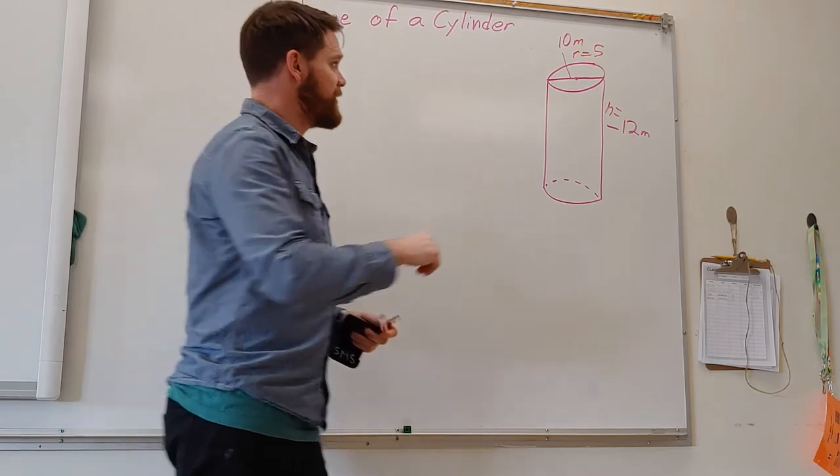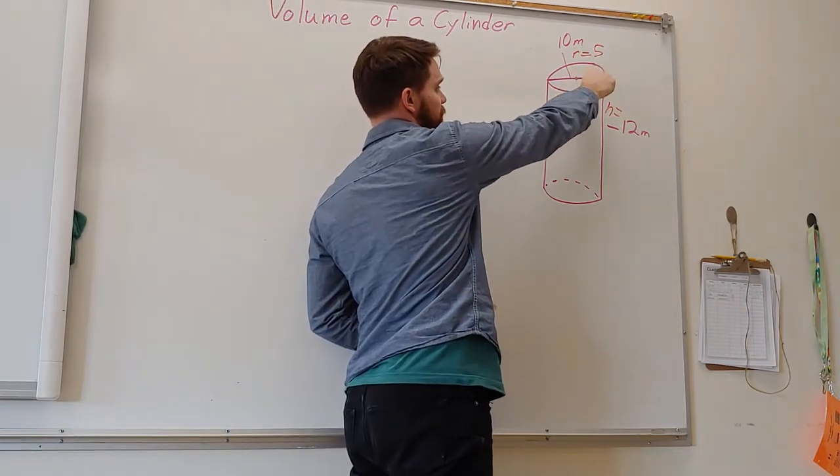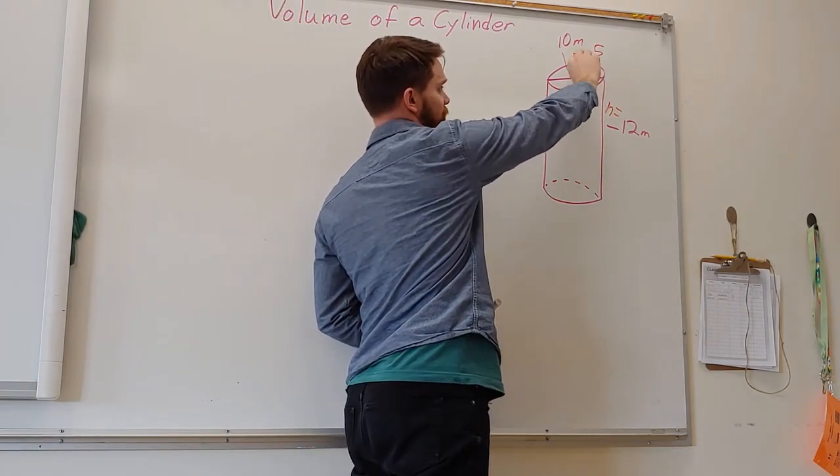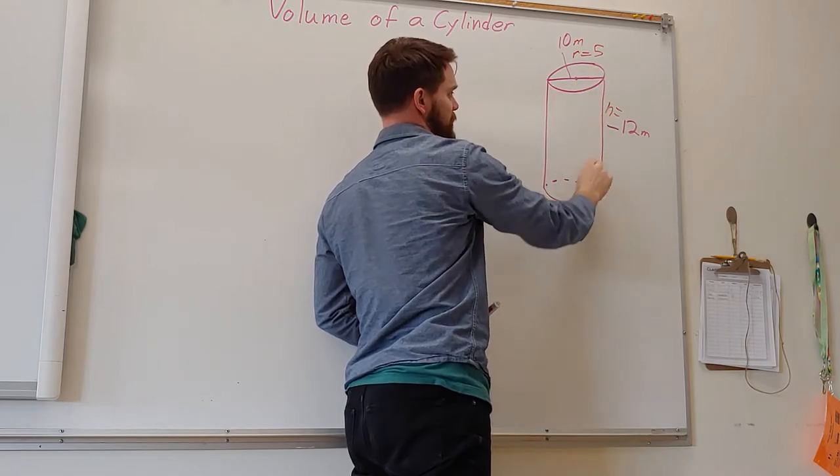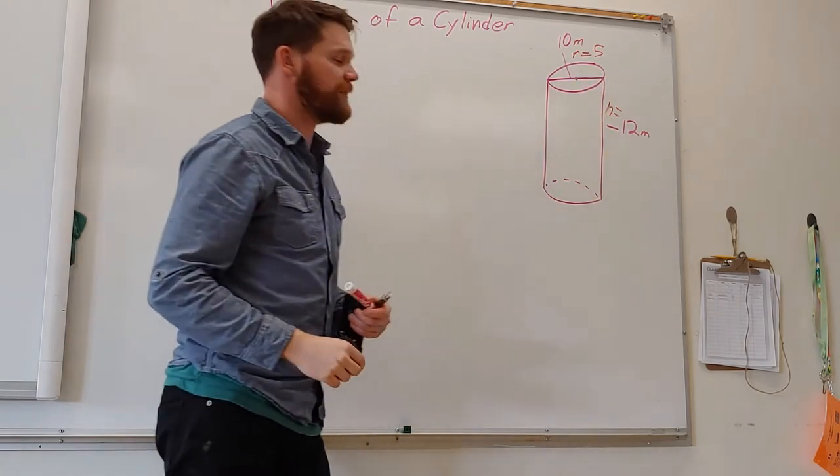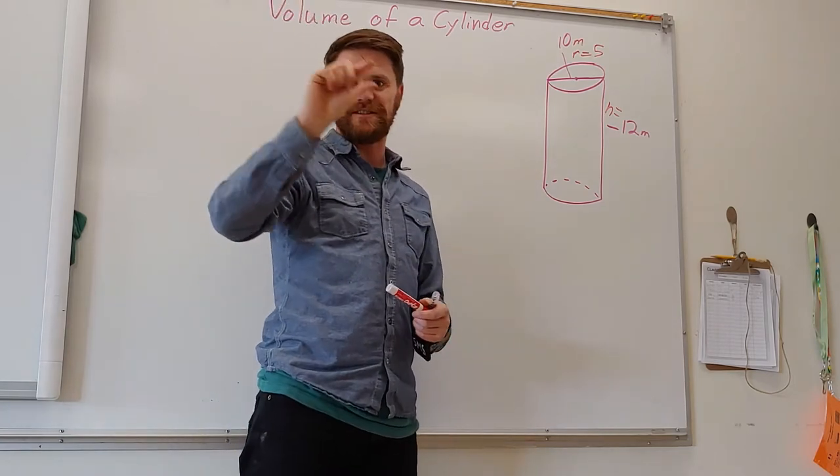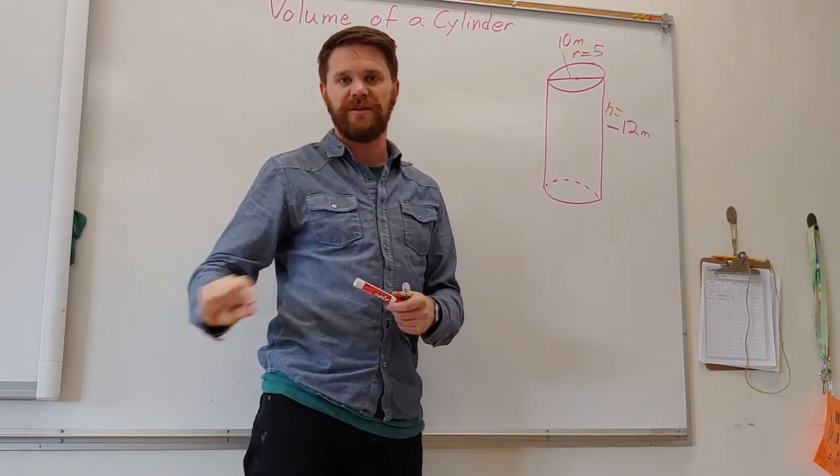What we're going to find out is the area of the circle on the top, and then multiply it by each meter, by 12 meters right there. So you kind of imagine each is a little section going all the way down the cylinder. That's how we're going to find it.